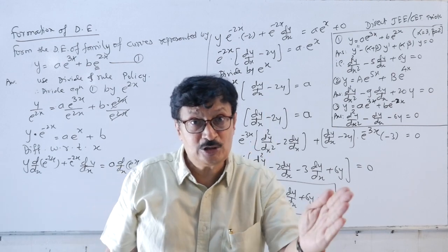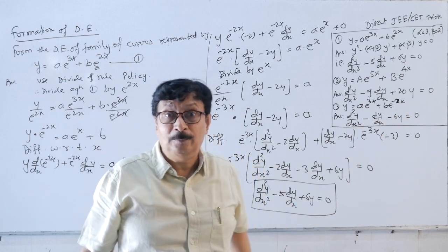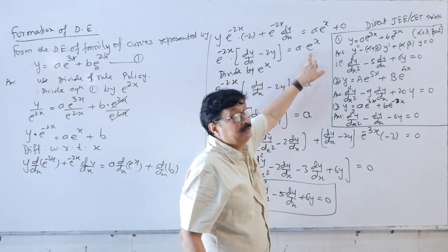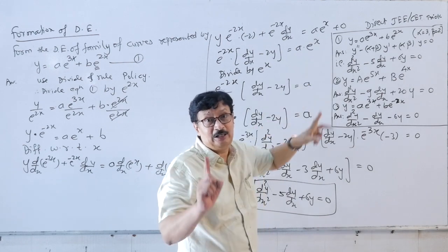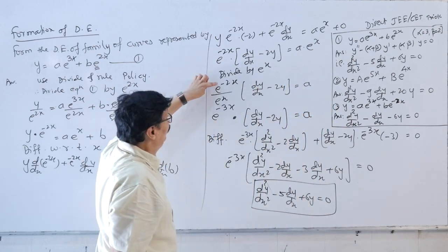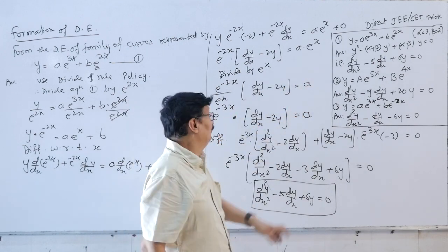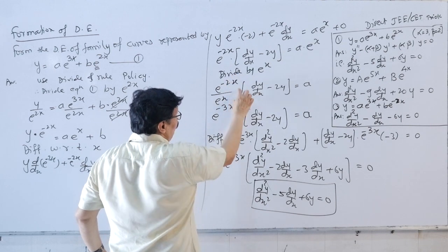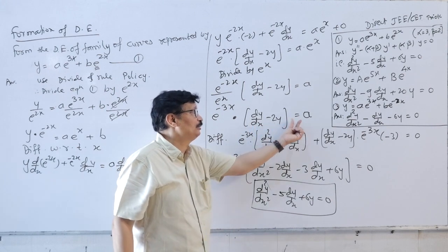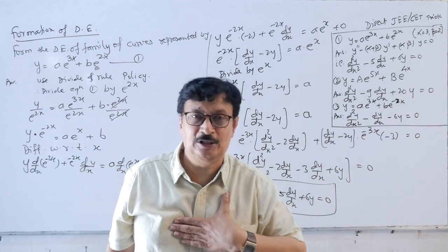To isolate a, divide both sides by e^x: e^(−2x−x)·[dy/dx − 2y] = a, giving e^(−3x)·[dy/dx − 2y] = a. A is now isolated and can be eliminated by differentiating both sides with respect to x, where the product rule will apply.